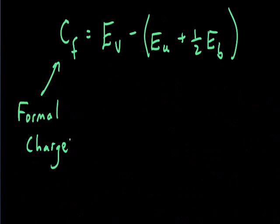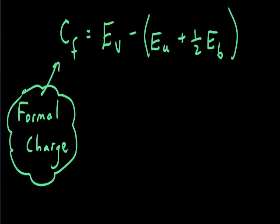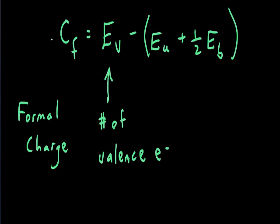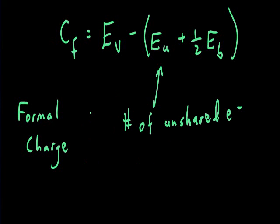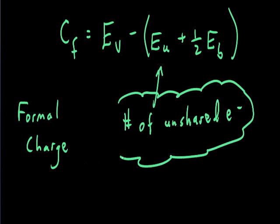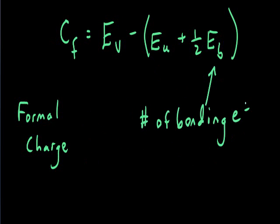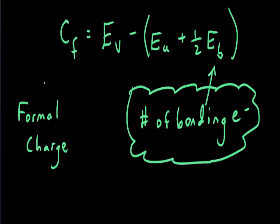To calculate formal charge, we'll use this equation. Formal charge is represented by C with a subscript F. E sub V represents the number of valence electrons on the atom in question. E sub U is how many unshared electrons are on the atom in question when we look at the Lewis structure. E sub B represents the number of bonding electrons connected to the atom in question when we look at the Lewis structure.